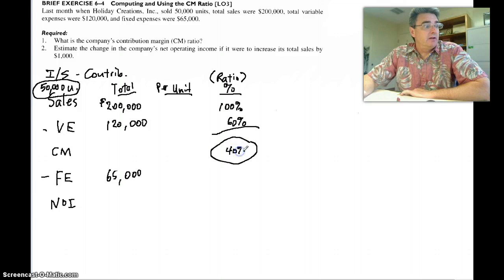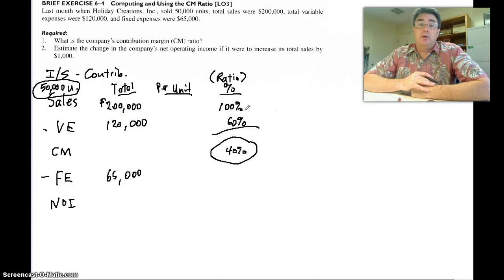And if you know what those two are, you know what this one is. Forty percent. Because the variable expenses and the contribution margin together always have to equal 100%. So that's part one.